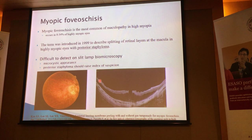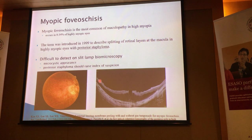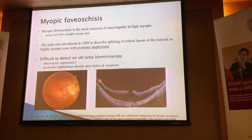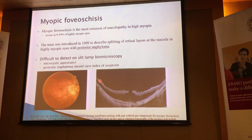There was no OCT at that point. So if you actually look at an eye with myopic schisis that's already been proven on OCT, you'll find that it's very hard to see any evident abnormality. Some would say that they could imagine some microcystic appearance of the macula, but it's really hard to tell. The only way to raise your index of suspicion is really that there's a posterior staphyloma.